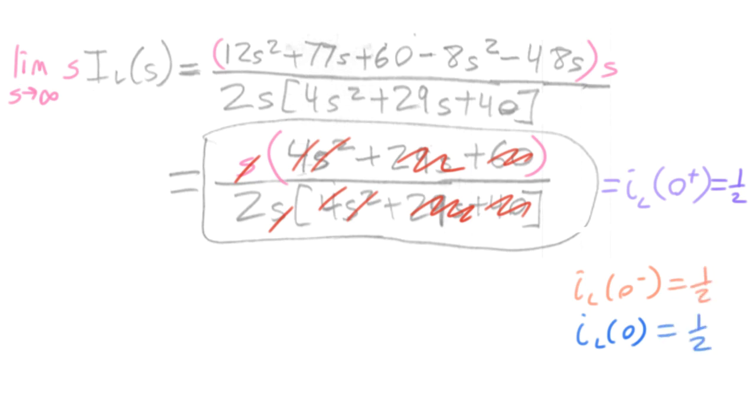Basically, whenever you have one of these switching circuits, and you're switching from one kind of circuit configuration to another, it's the electric field in the capacitor in the form of the voltage across it, and it's the magnetic field in the inductor in terms of the current running through it, which encapsulate all of the information about the history of the circuit that we need to figure out what happens going forward after the switch is flipped.